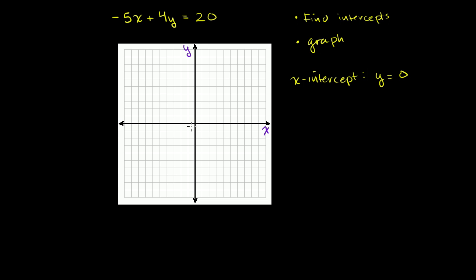And then by that same argument, what's the y-intercept? If I'm somewhere along the y-axis, what's my x-value? I'm not to the right or the left, so my x-value has to be 0. So the y-intercept occurs when x is equal to 0.